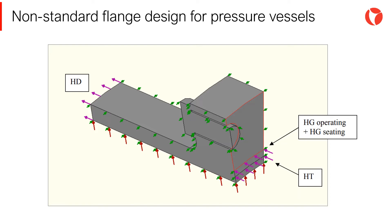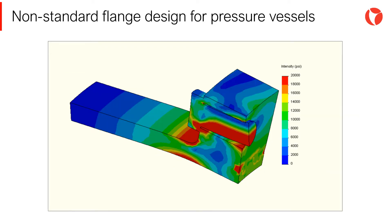The image on the screen represents the load distribution which a flange is subjected to during bolt tightening and operation. The figure shows a typical stress distribution in a loose type flange during operation, where the maximum stress is located in the area of the hub and the bolts of the flange.